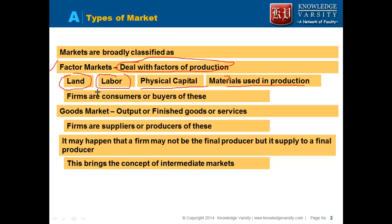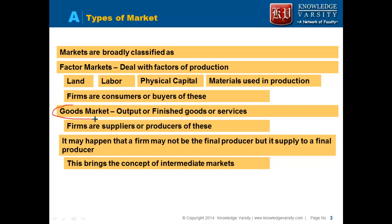So mostly the firms are buyers of factors of production. Also consumers can be buyers of these factors. So these are your factor markets. Then comes the goods market.